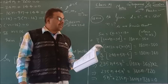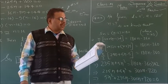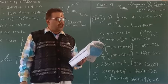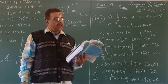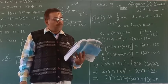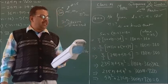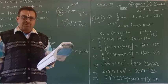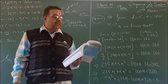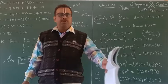Now see the last question, question 18: the difference between any two consecutive angles of a polygon is 5 degrees. If the smallest angle is 120 degrees, find the number of sides of the polygon.